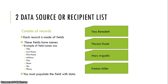Your data source consists of records, and each record is made of fields. These fields have names. Examples of the field names are like title, last name, first name, address, city, state, zip, and phone. When you create a data source from scratch, you must populate the fields with data.